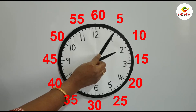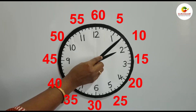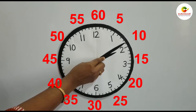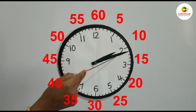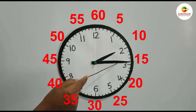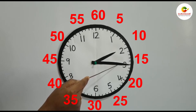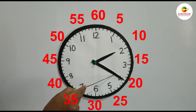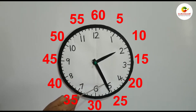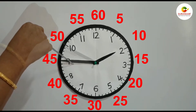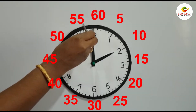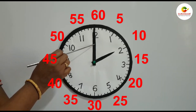We will continue counting the next 5 divisions: 6, 7, 8, 9, 10. So when the minute hand reaches number 2, 10 minutes are completed. In the same way, as we count each number, we do skip counts of 5. When it reaches 3, it is 15 minutes; 20 minutes; 25 minutes; 30 minutes; 35 minutes; 40 minutes; 45 minutes; 50 minutes; 55 minutes; 60 minutes — that means 1 hour is completed.